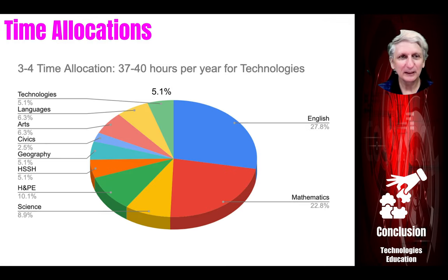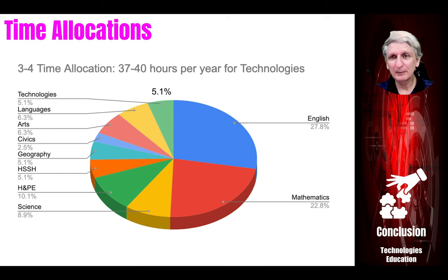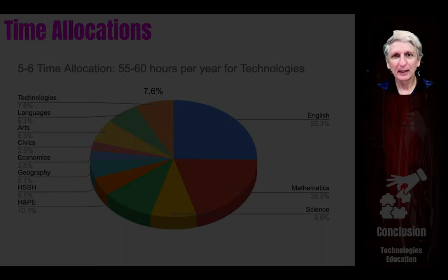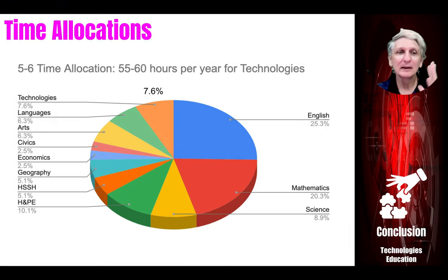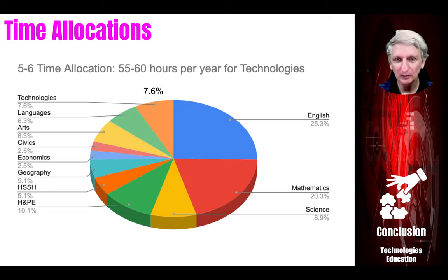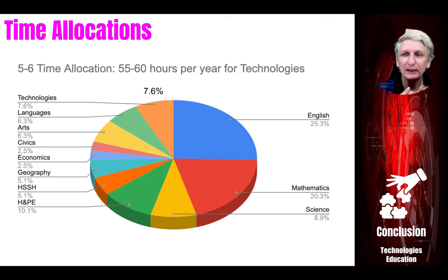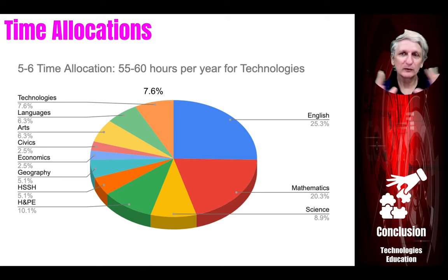In years three to four, the percentage has gone from almost 3% to over 5% of curriculum time at the bare minimum. In years five to six, we're approaching 8% of curriculum time, while science is approaching 9%, mathematics 20%, English 25%, and so on. So that sort of sits within the importance of the subjects.